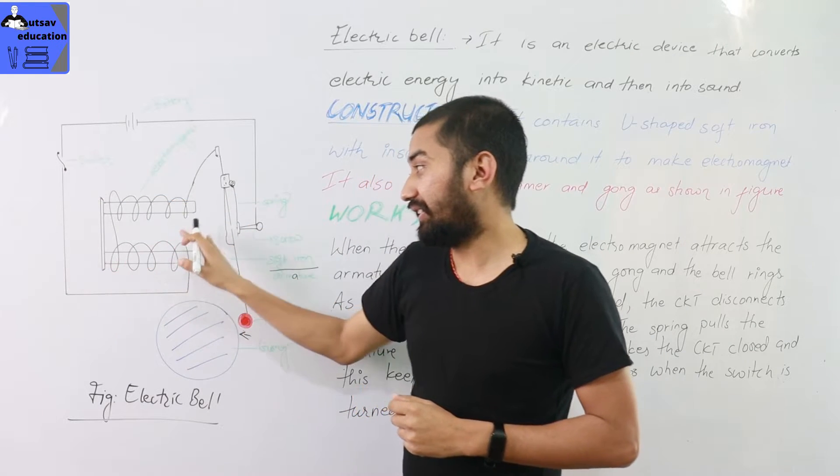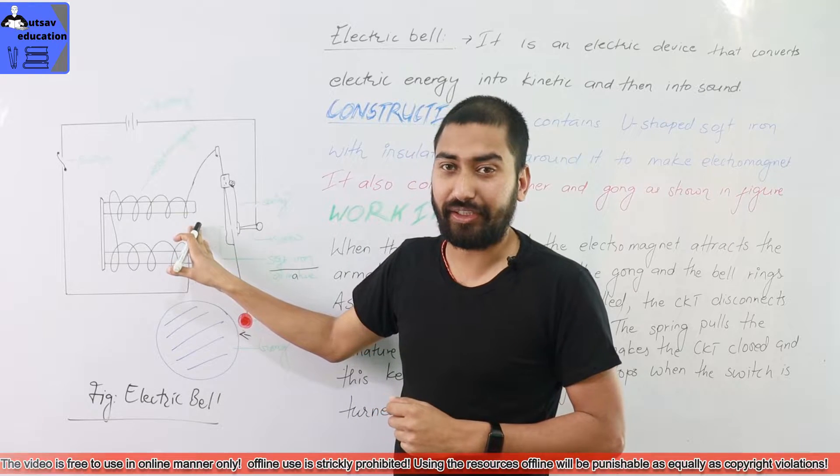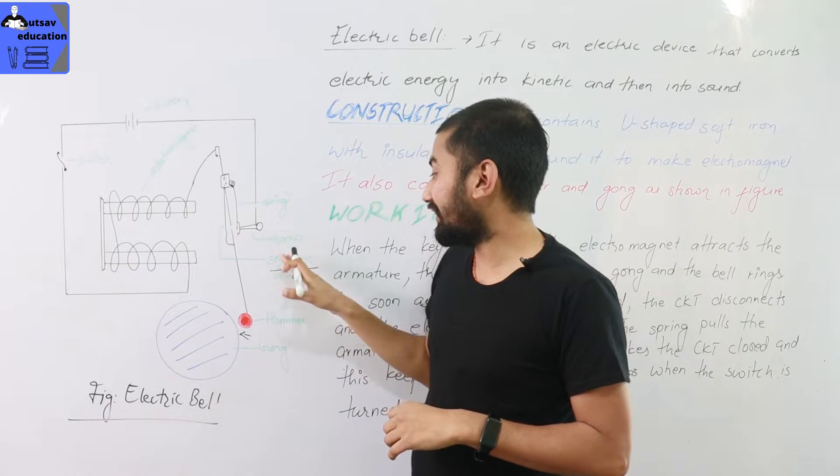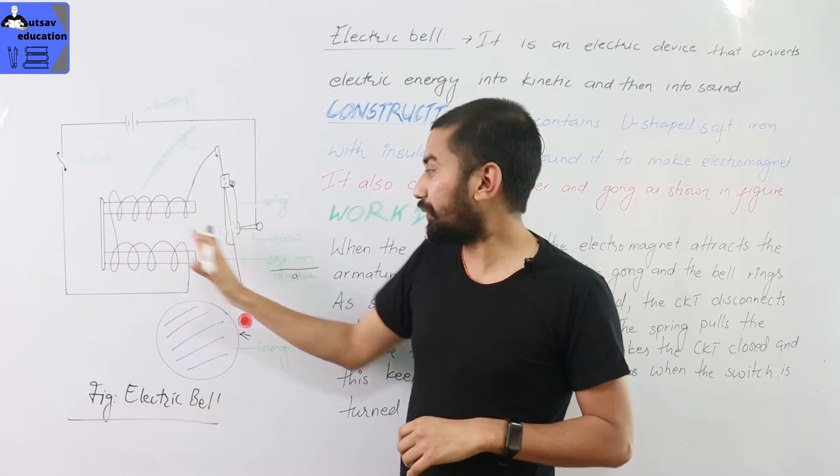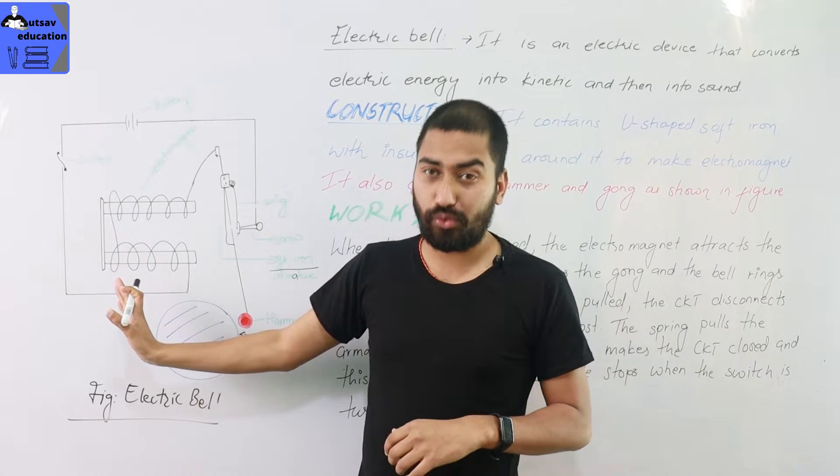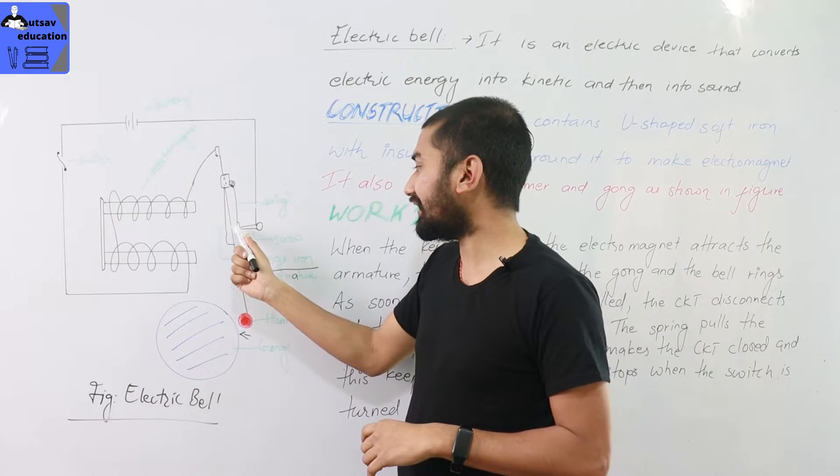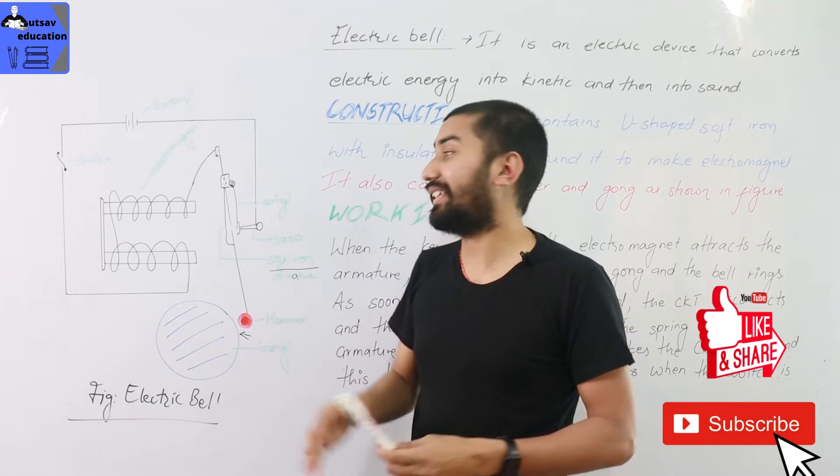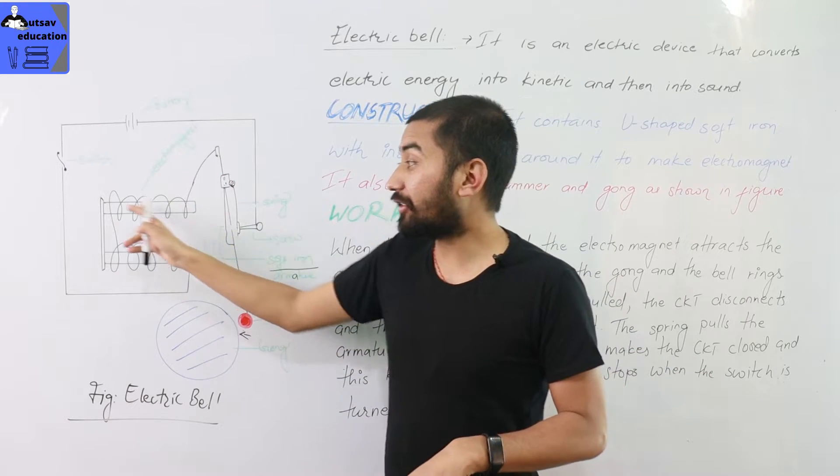It activates and it behaves as an electromagnet. Due to the electromagnet, the soft iron armature is attracted. The soft iron armature moves towards the electromagnet. So the circuit becomes open. That means it will switch off, the electromagnet deactivates.